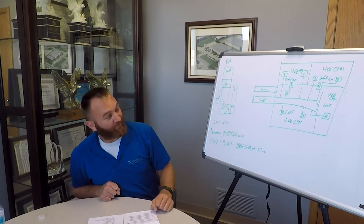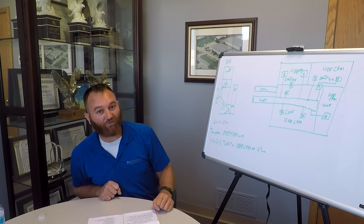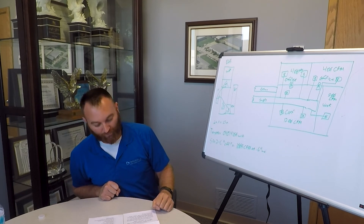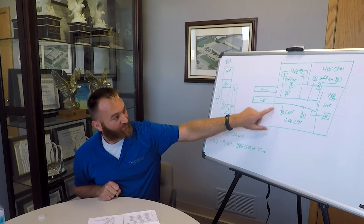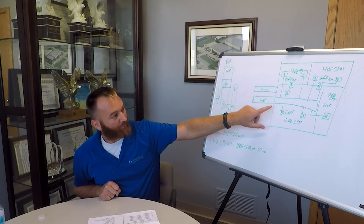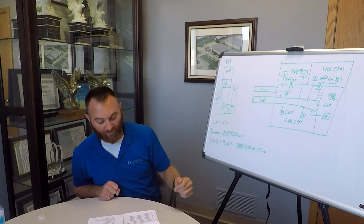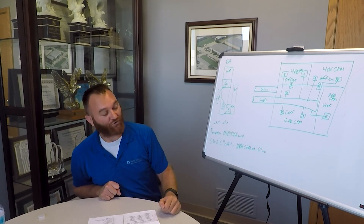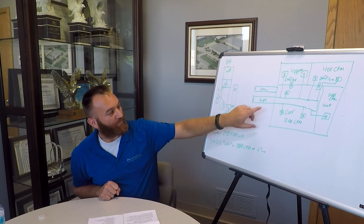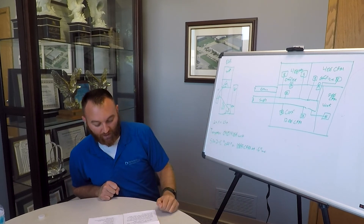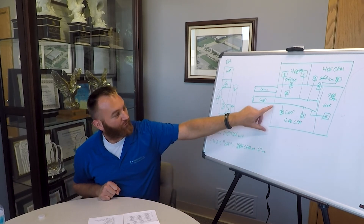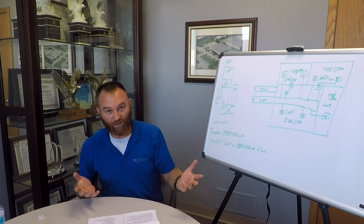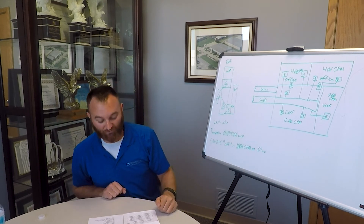Air balancing should always be performed by a qualified person with calibrated tools. This can include a balance hood for each supply or return vent, or a magnehelic or digital manometer with the pitot-static tube. You use these tools to adjust your branch dampers to provide the proper CFM.